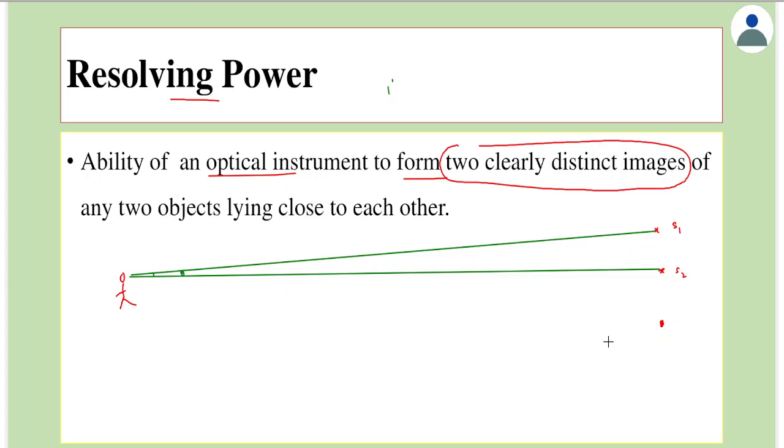So in that case, we use an optical instrument. That instrument would separate them as two different objects. This ability is called as resolving power.